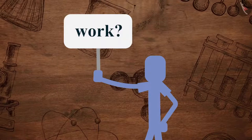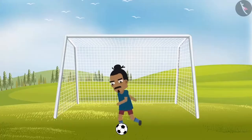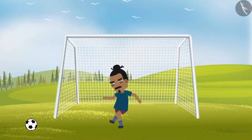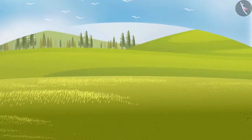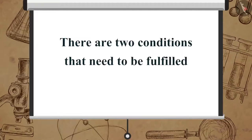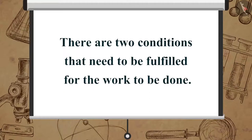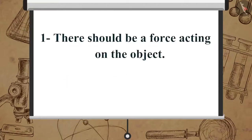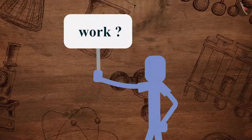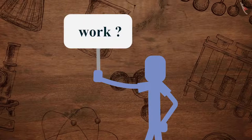Now let's have a look at a situation that science considers as work. You kick a football — your work is done as you are applying force on the ball and it is being displaced. In this situation there are two conditions that need to be fulfilled for work to be done: one, there should be a force acting on the object; two, the object must be displaced. If any of the two conditions are not met, work is not considered done according to science.